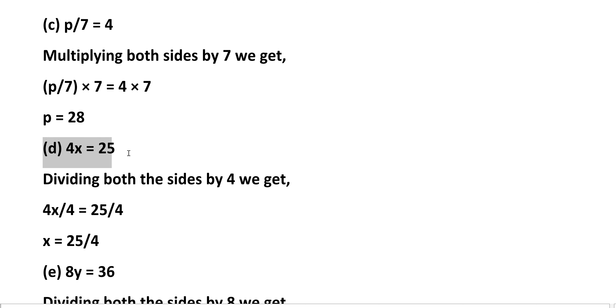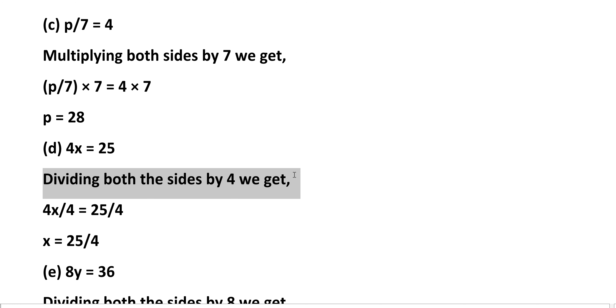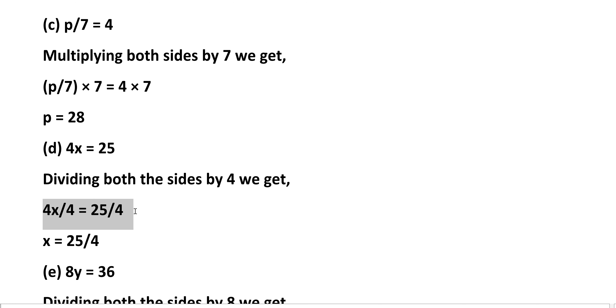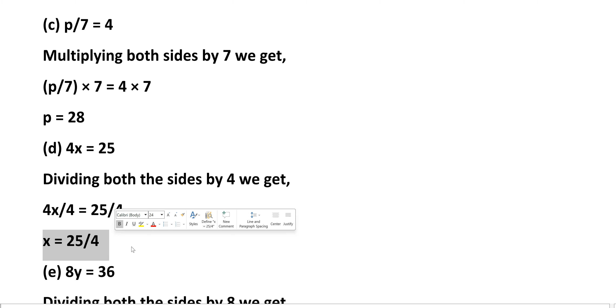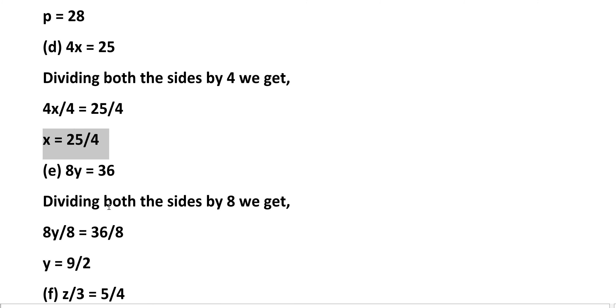Another method is the transpose method. Here LHS values move to the RHS. If the LHS is multiplied, when it moves to RHS it is divided. If the LHS is divided, then it moves to RHS multiplied. D: 4X equals 25. Divide both sides by 4: 4X by 4 equals 25 by 4, that is X equals 25 by 4.